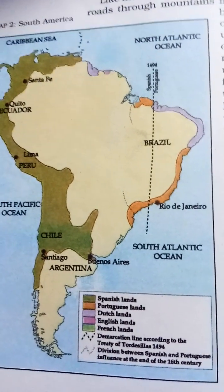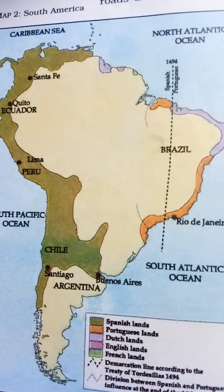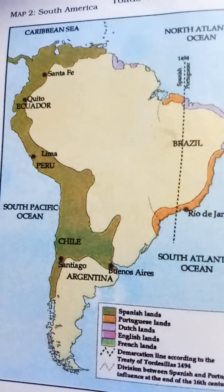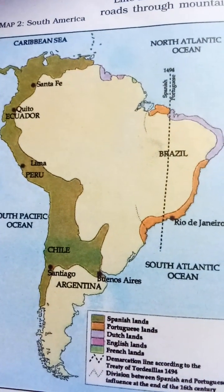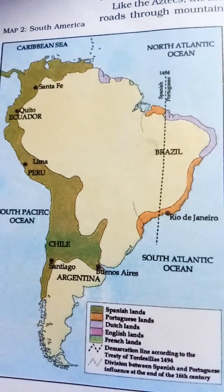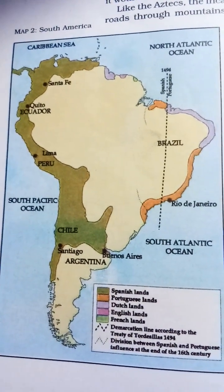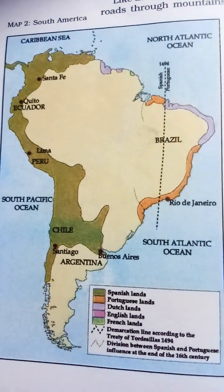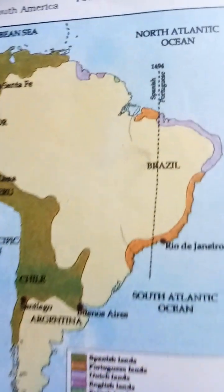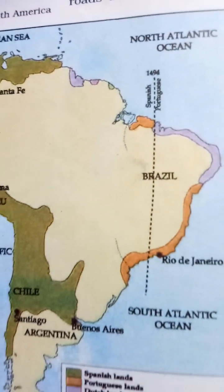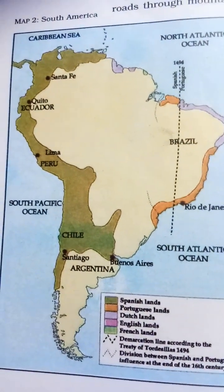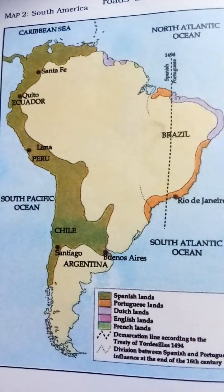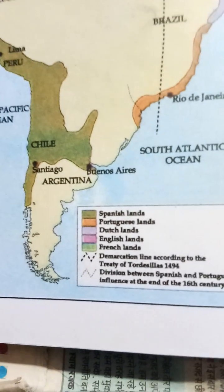Here you will see the Incas of Peru — the largest indigenous civilization in South America. For the understanding of the Incas of Peru, you will have to see the South American map and world map. You will see here Brazil, the North Atlantic Ocean, South Pacific Ocean, Rio de Janeiro, and South Atlantic Ocean, along with the important factors of location.